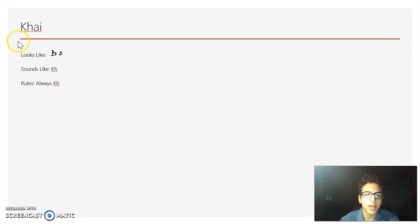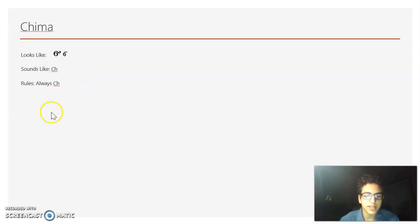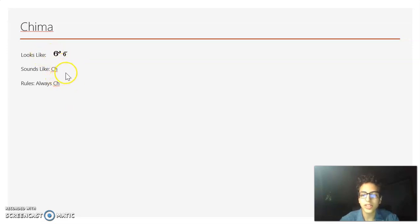Now we have Chai. The capital letter looks kind of like a B, and the lowercase letter looks like that. It will always sound like KH. And the last letter is Chima — it looks kind of like a 6 in English, and it always makes the CH sound.